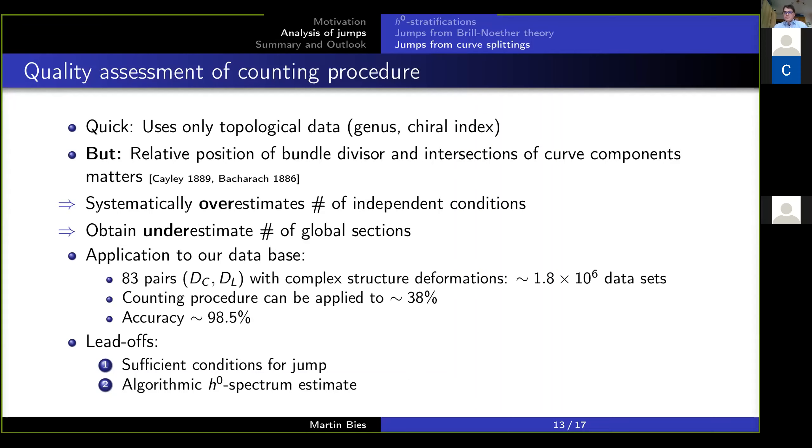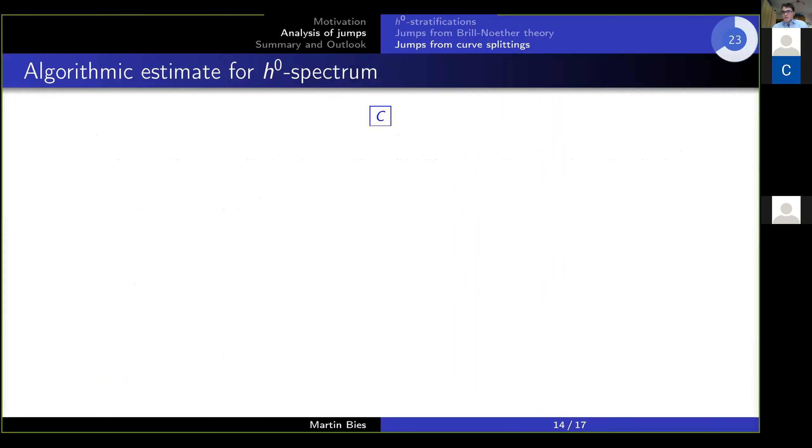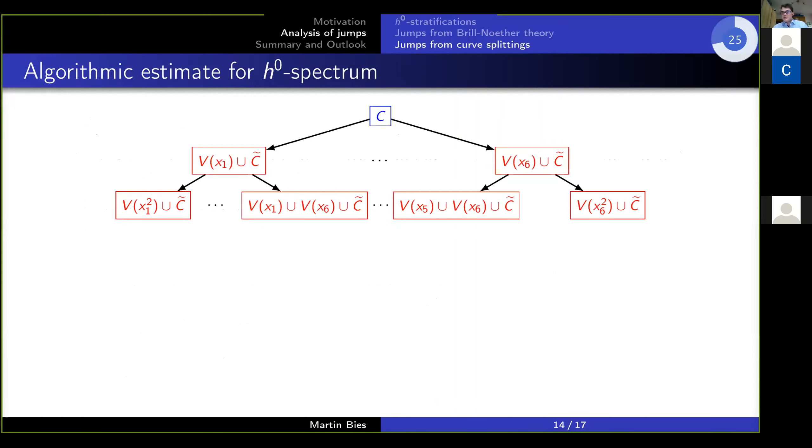So I'm quite confident that what we're doing here is giving us a good estimate. And now taking into account this underestimate of global sections systematically, one lead-off is to formulate a sufficient condition for a jump, which I'm not going to talk about now for time reasons, but you can ask me about it later. Rather, I will focus on the second part, which is you can use this as an algorithmic spectrum estimate. And by this I mean the following.